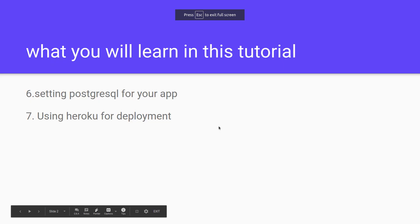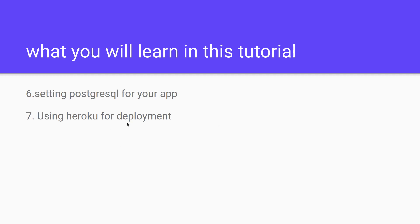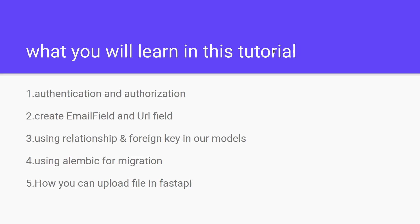What you will learn in this tutorial: first, you will learn authentication and authorization for users. Second, you will learn how to apply email fields and URL fields. At the next step, I will show you relationships and foreign keys in FastAPI, which we need for the comment and post tables.